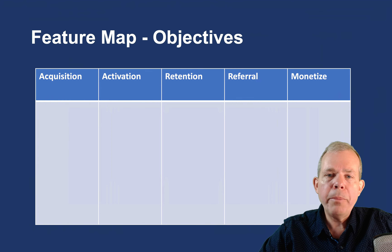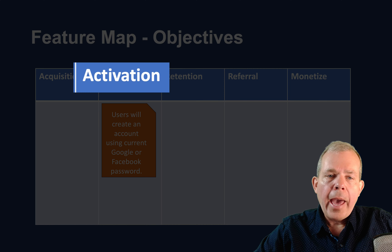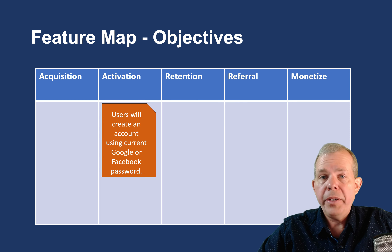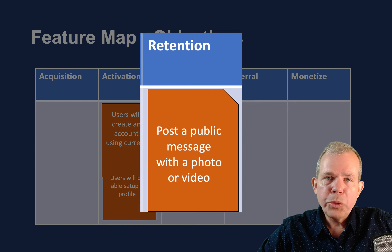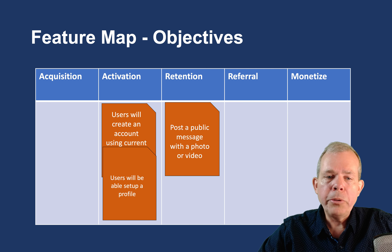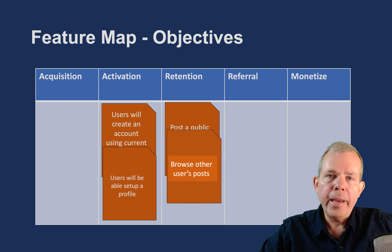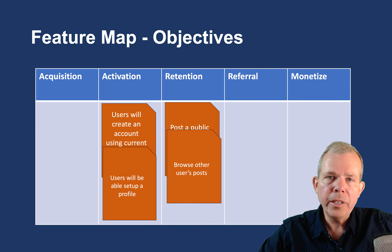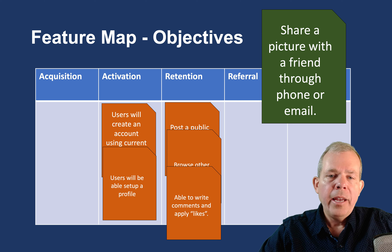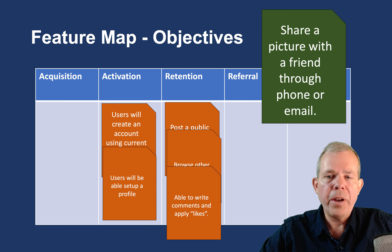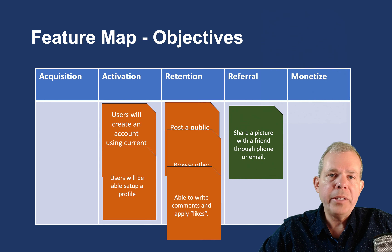So this is our feature map with the objectives. The first column is activation: users will create an account using Google or Facebook password — that's covered. They will also be able to set up a profile. Retention means what creates actual value or entertainment: posting a public message with a photo or video would fit there, as would browsing other people's items. We also have the ability to write or comment, which might fit retention or referral. I've got some gaps though — three empty columns — so I might add new features. A new one: share a picture with a friend via phone message or email, which clearly fits in the referral category.